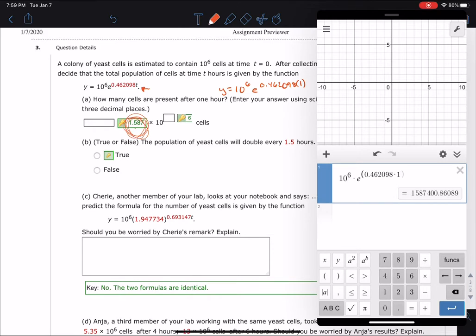You would have gotten, in standard exponential form, y equals a sub 0, which is 10 to the 6th, times my b value, which is 1.587 to the t. And this 1.567 would be how many are there after one hour. Times 10 to the 6th.